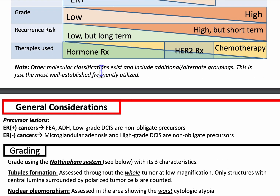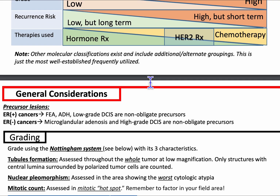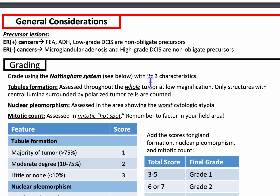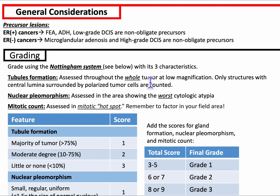Other molecular classifications exist, but this is the most well-established. For precursor lesions for ER positive cancers, those include flat epithelial atypia (FEA), atypical ductal hyperplasia (ADH), and low-grade DCIS — these are all non-obligate precursors. ER negative cancers' precursors include microglandular adenosis and high-grade DCIS.